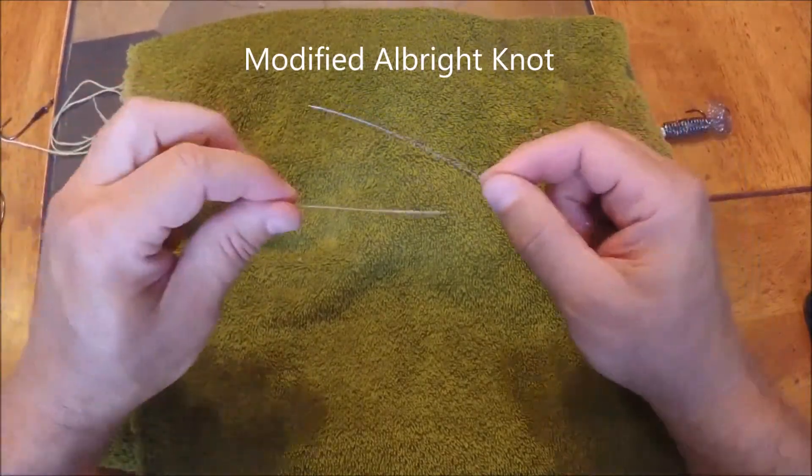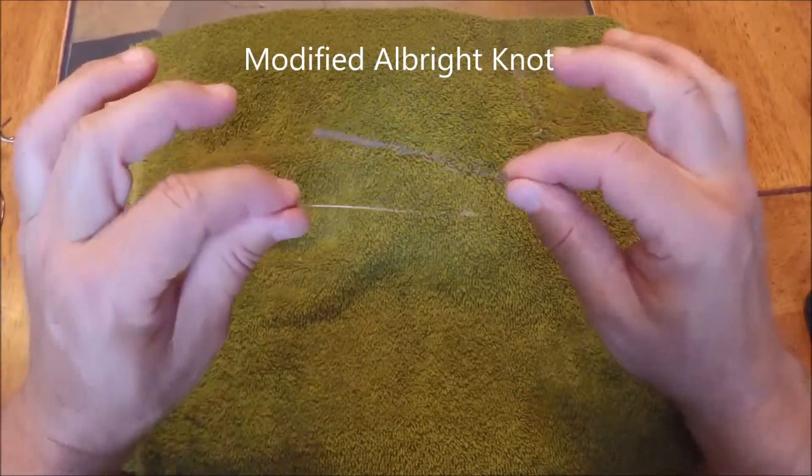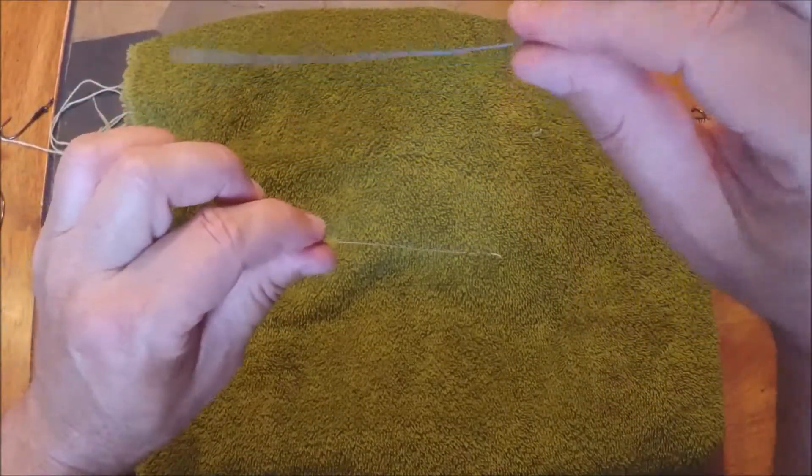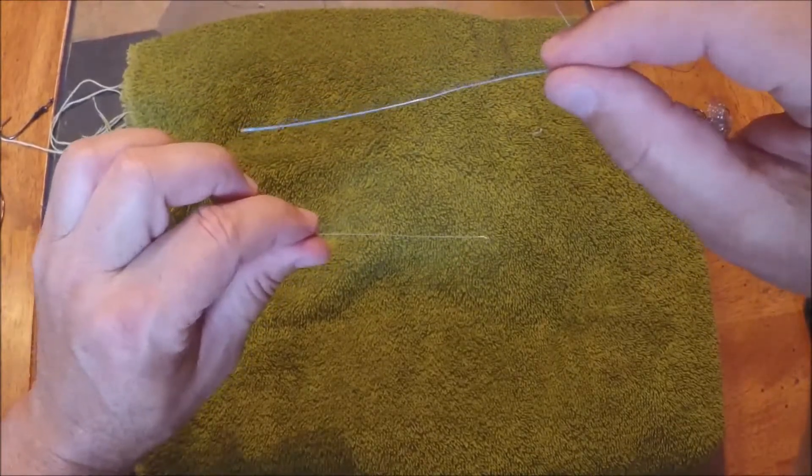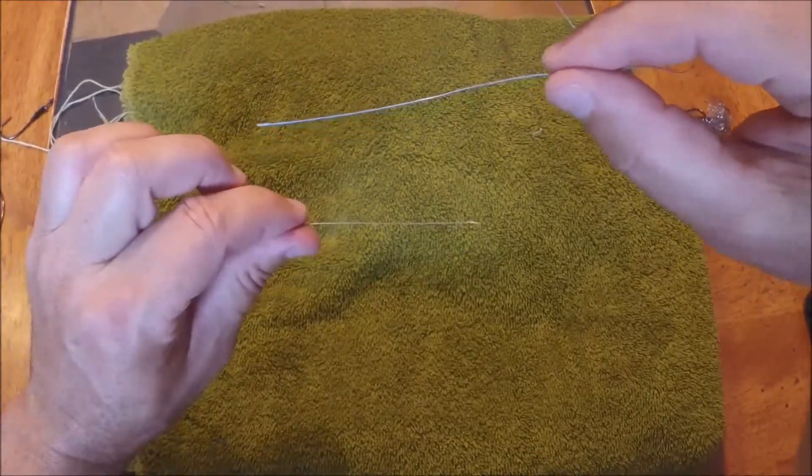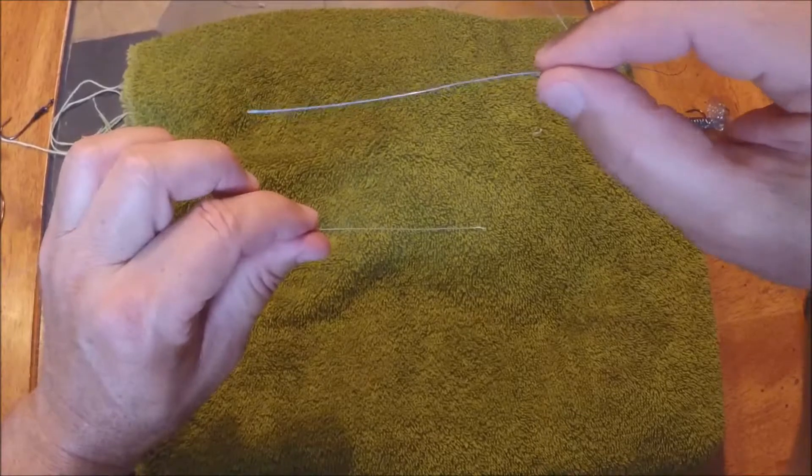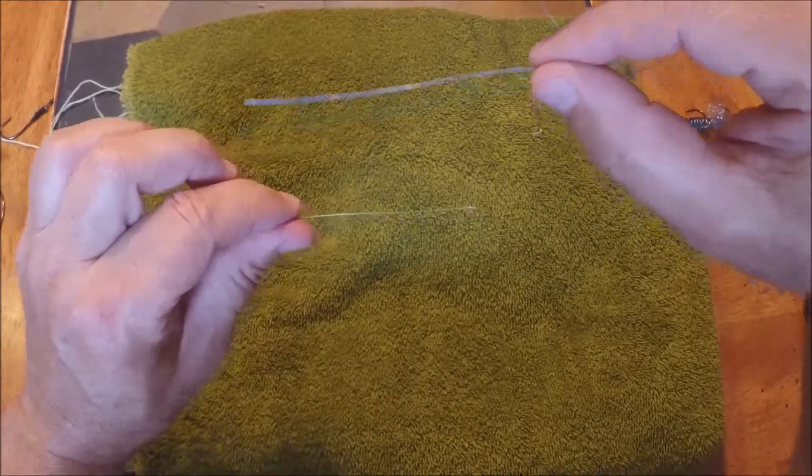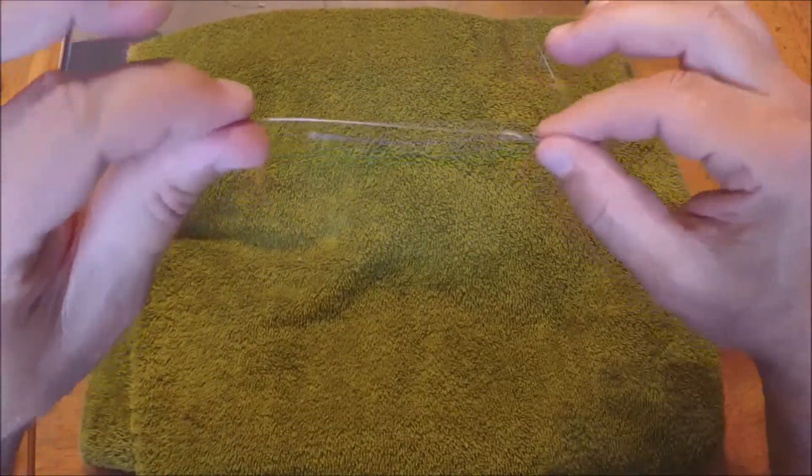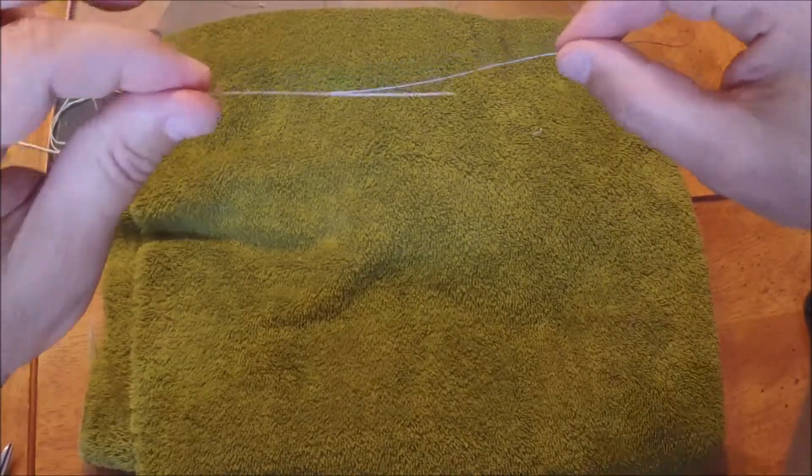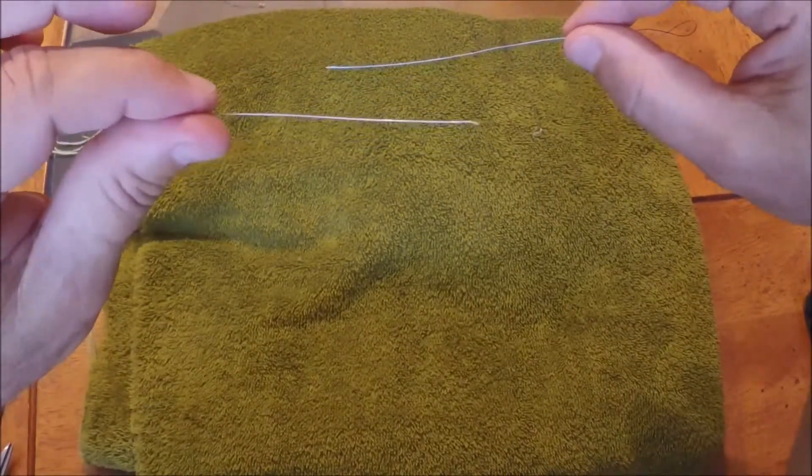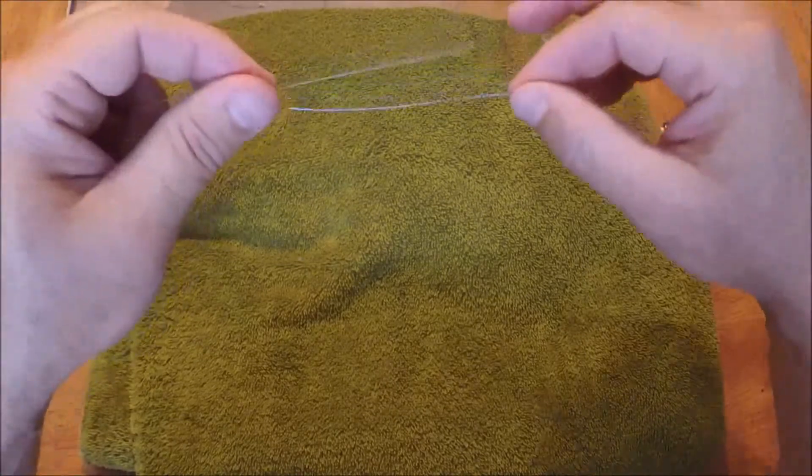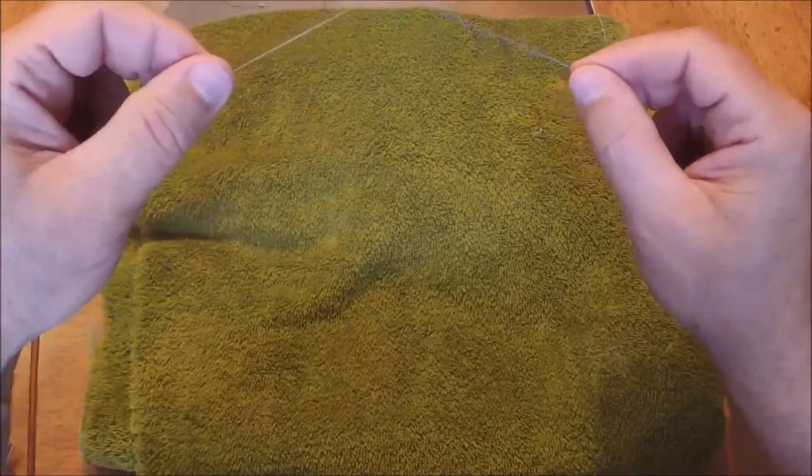This knot is called a modified Albright and it's when I want to attach two lines together. In this case I've got some PowerPro Super Slick, and it's just like it sounds—it's very slick and it's used for making long casts. This is a fluorocarbon leader that would attach, and I would use this application in super clear water finesse fishing. I need to attach these lines but it needs to be super strong.